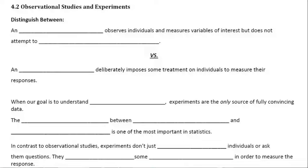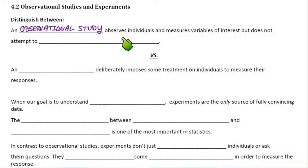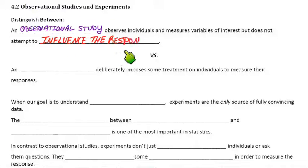Section 4.2 covers observational studies and experiments. The first term is an observational study — it observes individuals and measures variables of interest but does not attempt to influence the results or the responses. It just makes observations and doesn't actually impose anything on the study or try to influence the response.